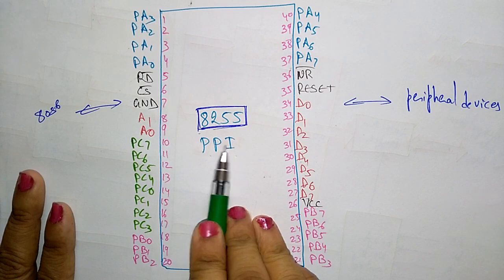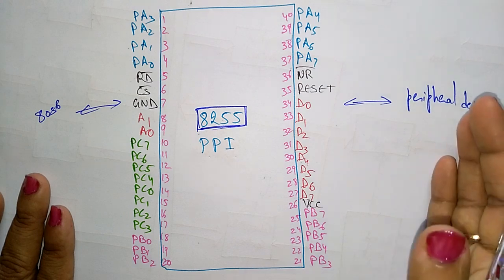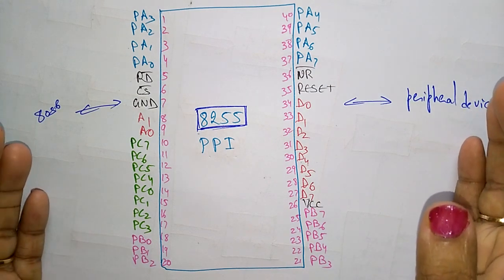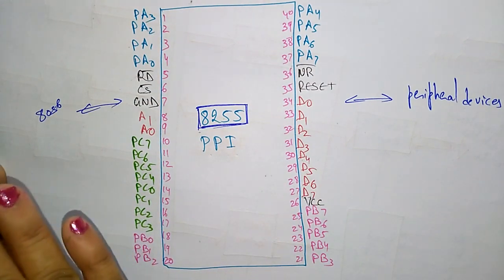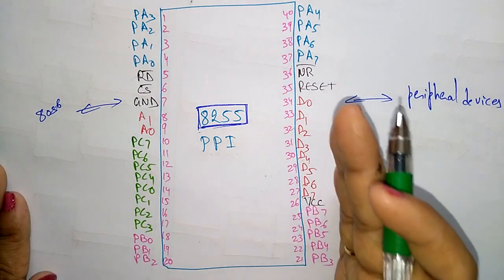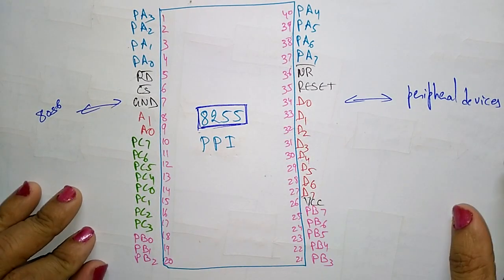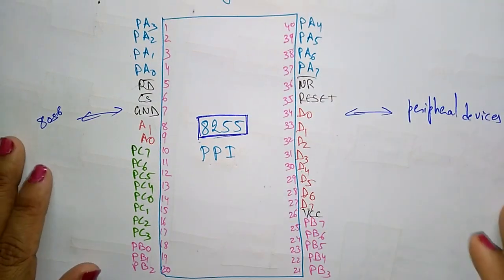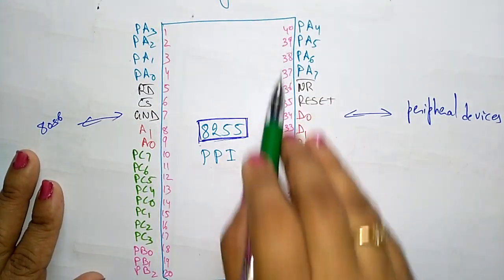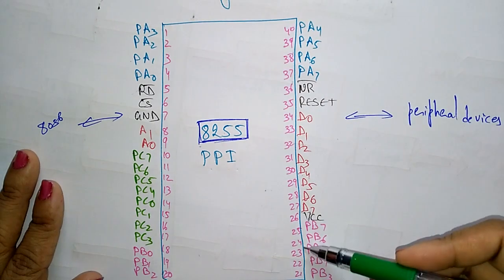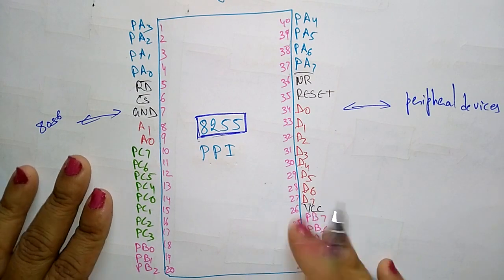These ports are connected to the peripheral devices. Whatever data the external components want to send to the processor, these ports will accept the data and send it to the 8086 microprocessor to perform the operation. The result is again sent back to the peripheral components. The 8255 is a 40-pin dual in-line package — 20 pins on each side.